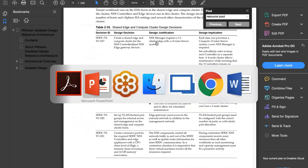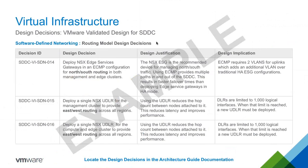Looking at the early access architecture guide, you can see all design decisions listed with IDs, justifications, and implications. This example shows three specific design decisions from software-defined networking for the routing model. You can drill into sub-areas like virtual infrastructure and software-defined networking. The design is easy to follow and find, with improvements planned for the future.